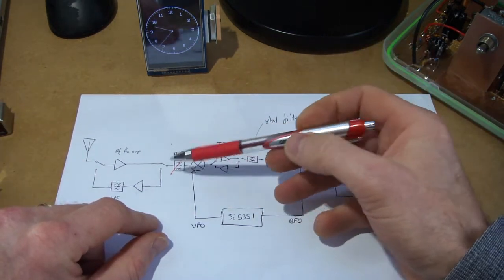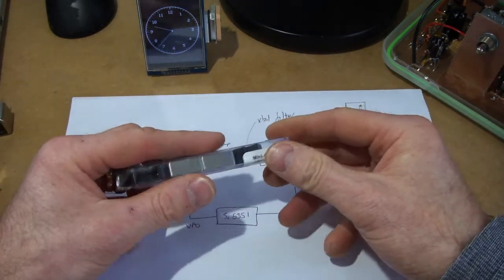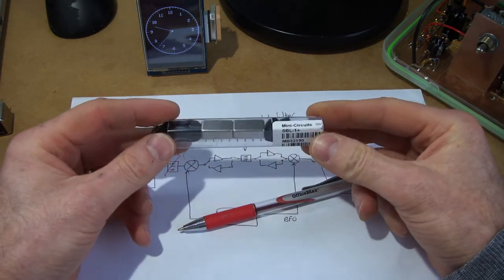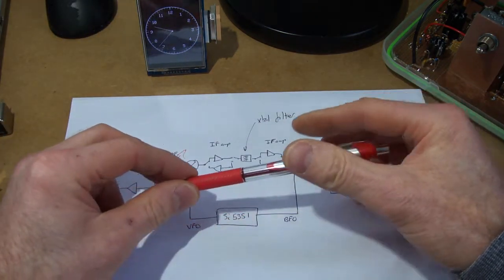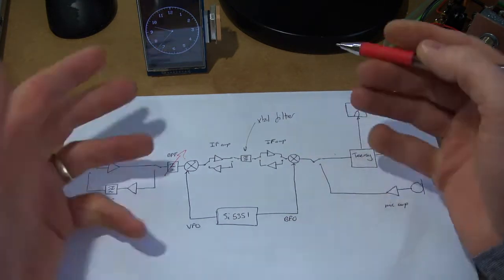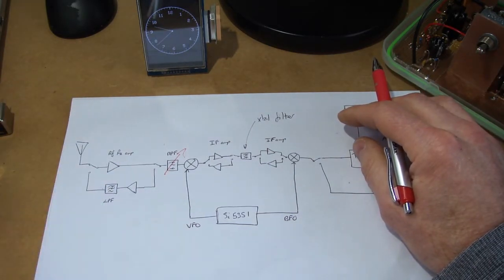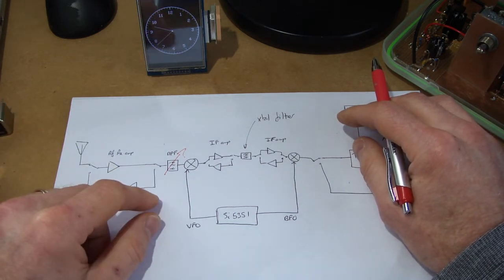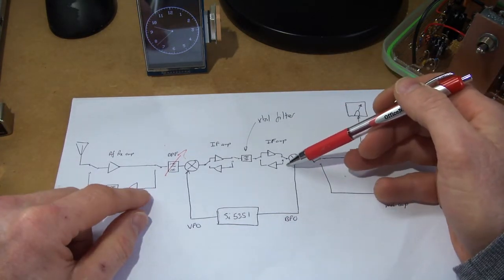In terms of the mixer, again more than happy—I've got sitting here in the junk box some Mini-Circuits SBL-1s. But then again, I'm more than happy to do away with that and go towards a homebrew double-balanced mixer with a diode ring and an input and output bifilar around transformers. Or if people want to try—I tried it once and I didn't do it very well—I'm more than happy to try again, say the cascoded J310s and maybe go for an active type mixer. So again, more than happy to entertain ideas on that one.